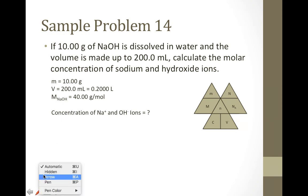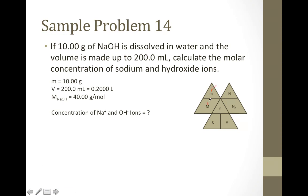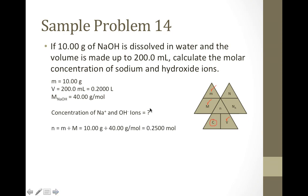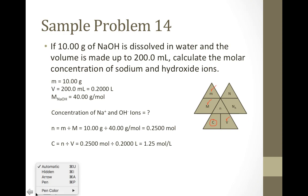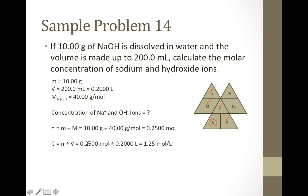We know our mass, and we can get the molar mass of NaOH from the periodic table: 40.0 g/mol. We know our volume, and we're trying to get to molar concentration. First, solve for moles: N equals mass divided by molar mass — 10 grams divided by 40.0 g/mol gives 0.25 moles. Then concentration: C equals N divided by V — 0.25 moles divided by 0.2 liters gives 1.25 mol/L.